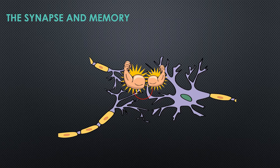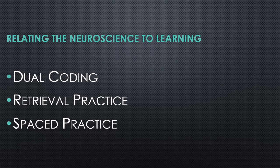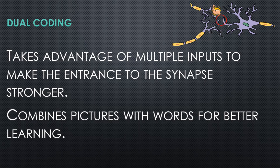We've looked at the basic neuroscience behind memory. Now we're going to look at some practical strategies: dual coding, retrieval practice, and spaced practice. Dual coding takes advantage of multiple inputs to make the entrance to the synapse stronger — the idea that we might use pictures and words, or audio input versus visual input, to access more neurons and make the entrance stronger.